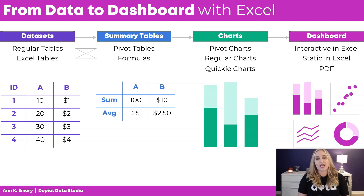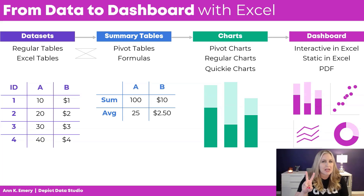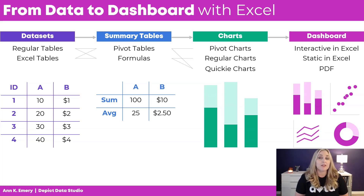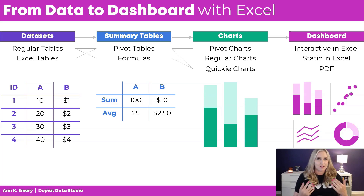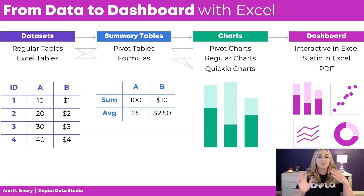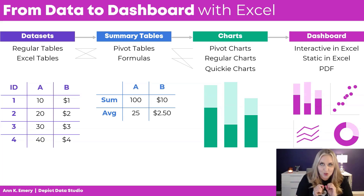Your data sets can live inside a regular table or an Excel table, and those can get summarized or tabulated with two main techniques: pivot tables or formulas. There are pros and cons of each style. Those summary tables can feed into different types of charts. For example, a pivot table can feed into a pivot chart, or a quickie chart — like sparklines, miniature bars called data bars, or automatic color coding like heat tables. Formulas can feed into regular charts or quickie charts. Technically pivot tables can feed into quickie charts, but it's a little hairy — I don't recommend it.